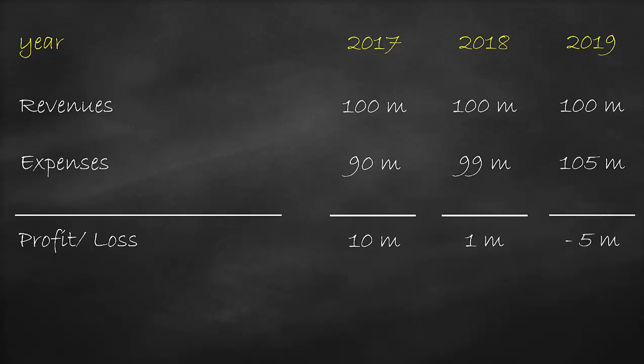So, what has happened over time? Well, the company has deteriorated over time as profits decrease. The reason behind the decline in profit is higher expenses over time, which is clear, but the problem with this single-step income statement is that it does not show us what type of expenses have increased over time.